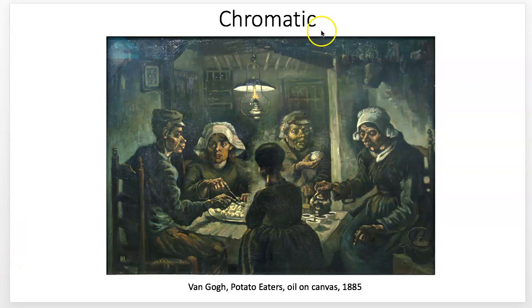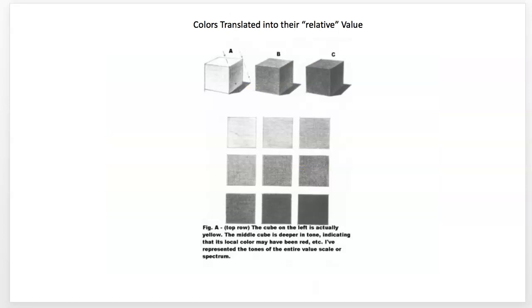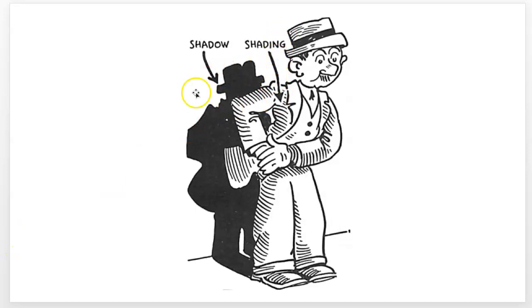Achromatic value means no color. Chromatic value means with color — very neutral colors with dulled saturation, but there's still chroma happening. Colors have a relative value even when translated into black and white, which is important when drawing something realistically in a black-and-white medium when the object is actually colored. You can think about the local color — the yellow, blue, red of it — and try to translate that into a gray, keeping in mind it will change depending on the light.